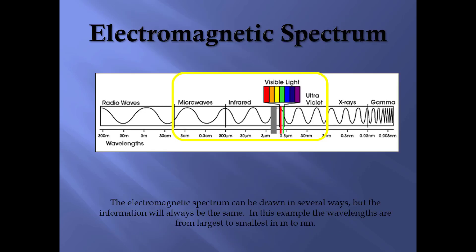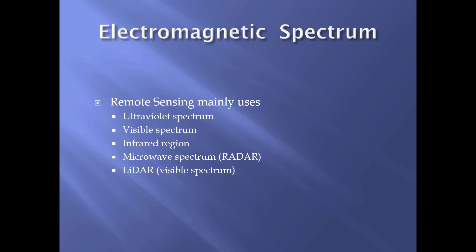The electromagnetic spectrum can be drawn in several ways and the information is always consistent. In this example, wavelengths are shown from largest to smallest: radio waves are the longest, then microwaves, infrared, visible light, ultraviolet, x-rays, and gamma — this should be a review from the lecture. Remote sensing mainly uses the ultraviolet, visible, and infrared spectrum. With active remote sensing, radar uses microwave and LIDAR uses the visible spectrum.